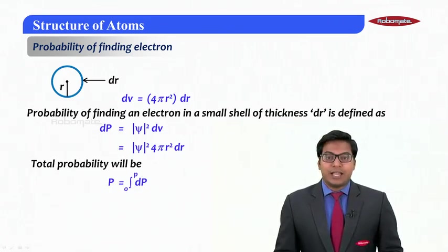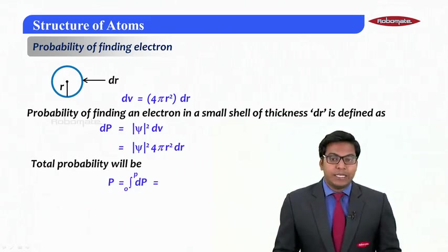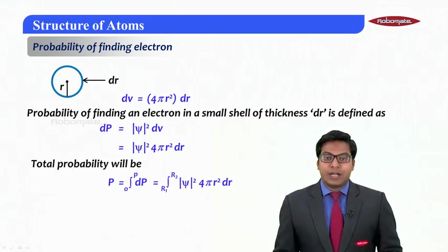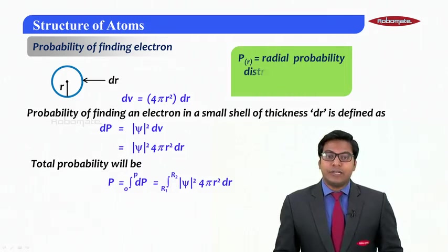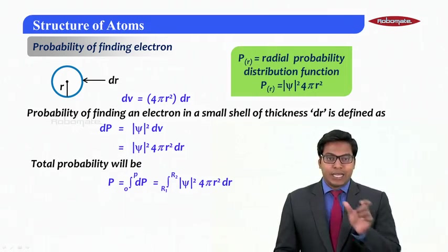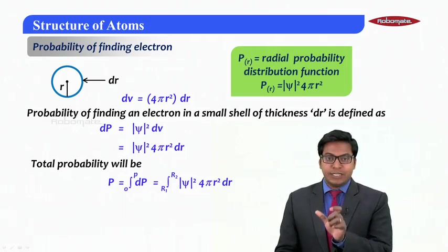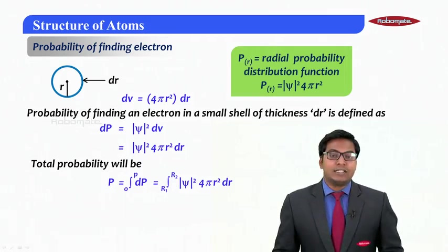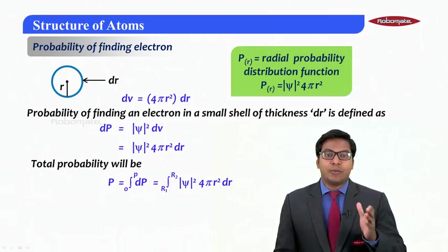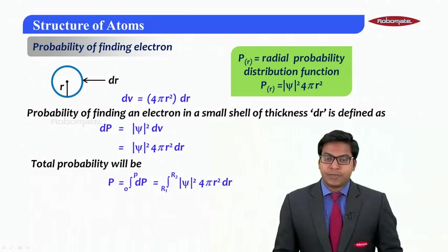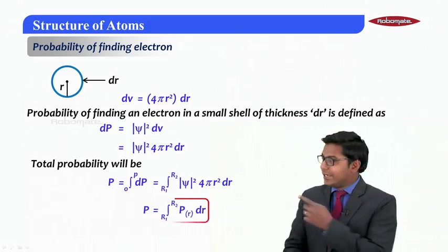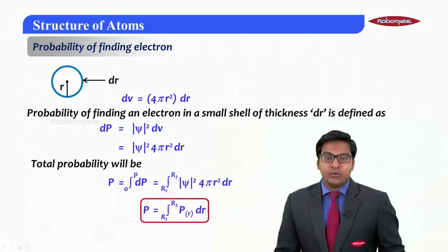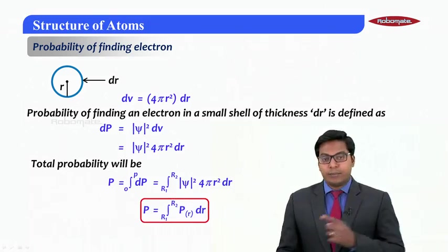The total probability we learned that I can integrate from 0 to ∫dP and it comes to be integral r₁ to r₂ ψ² 4πr²dr. Here that P(r) that has been defined in that integral part is what we call the radial probability distribution function. Therefore to calculate the total probability it is integral r₁ to r₂ P(r)·dr where P(r) is the probability distribution function.